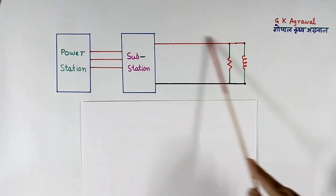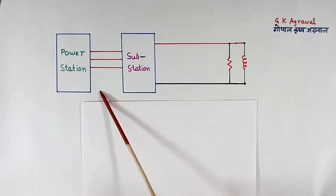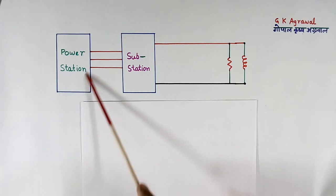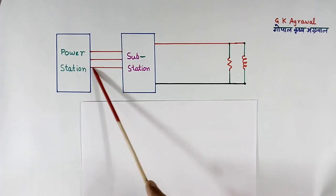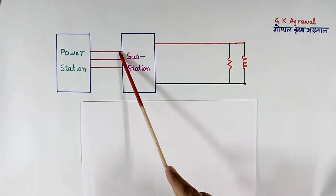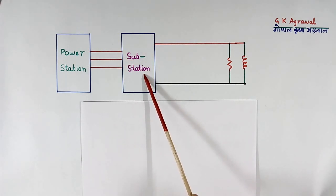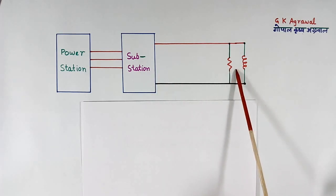Here I have shown one simple circuit diagram for explanation. This is power station. Power is generated at power station. This is transmission line, three phase transmission line. This is sub station and this is load.